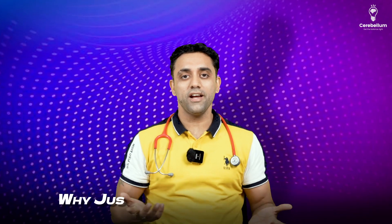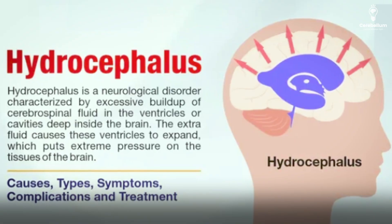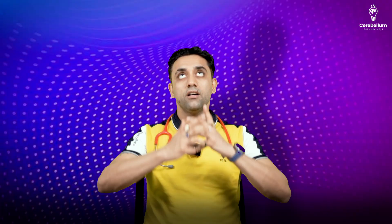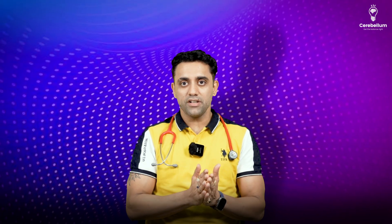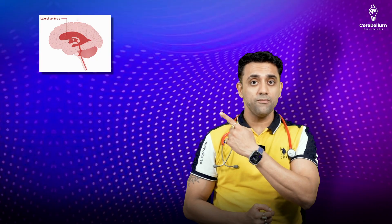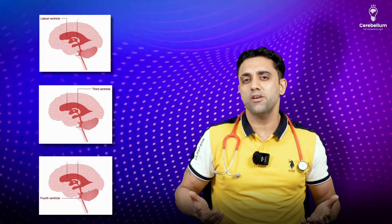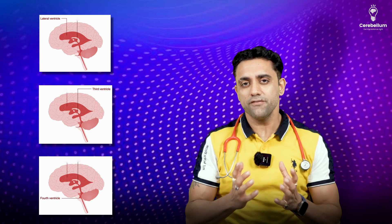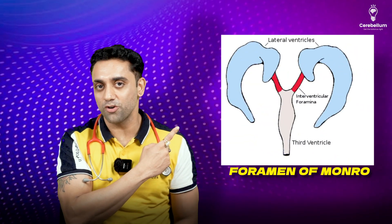Number one, what is the cause? Why does Hydrocephalus happen? There's a problem in the CSF pathway. Let's learn the whole picture of the CSF pathway. We have something known as the lateral ventricle, third ventricle, and fourth ventricle. The lateral ventricle and third ventricle are connected by which foramen? The answer is the foramen of Monro.